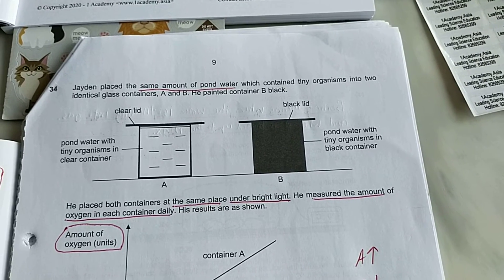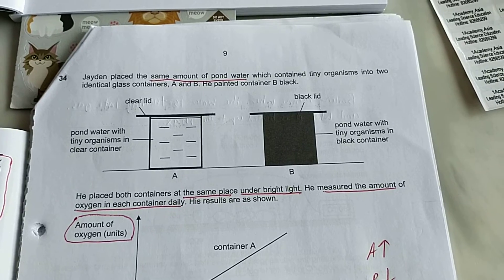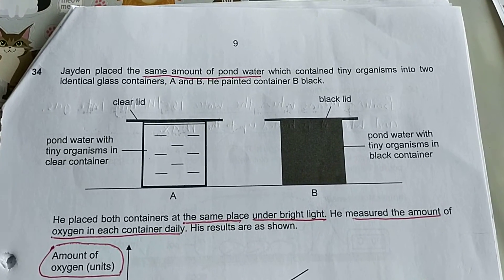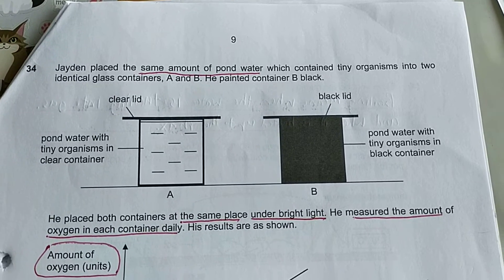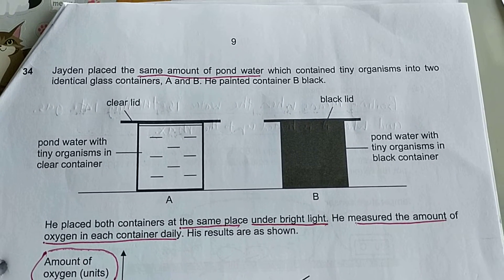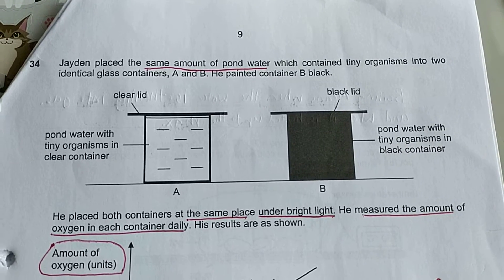This is question 34 of the PSLE 2020 science paper. It says Jaden placed the same amount of pond water which contained tiny organisms into two identical glass containers A and B.